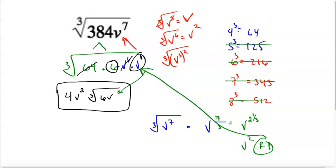So a quick lesson on cube roots — the same concepts apply with fourth roots and fifth roots. Look for numbers that go in evenly that many times, and for exponents you'd want something divisible by 4 instead of 3, and so on. Cube roots — any questions, please let me know. Thank you.